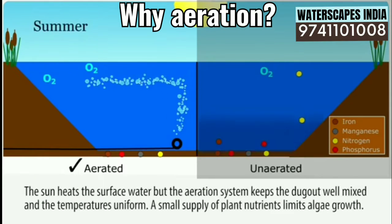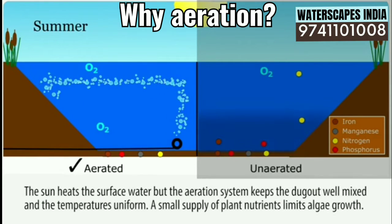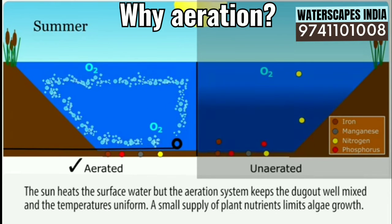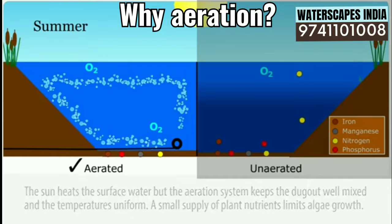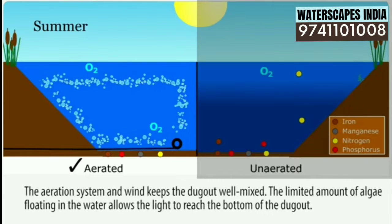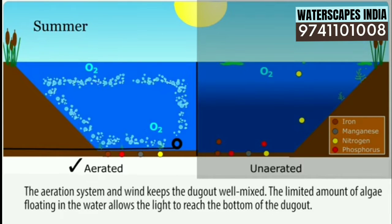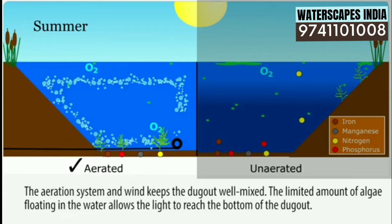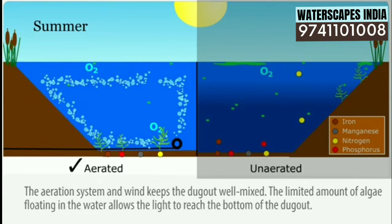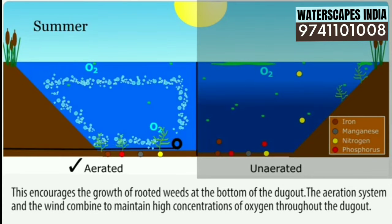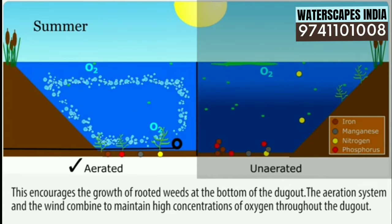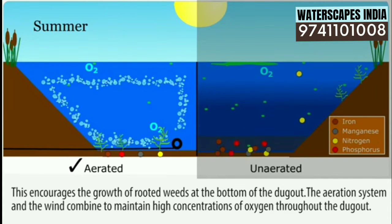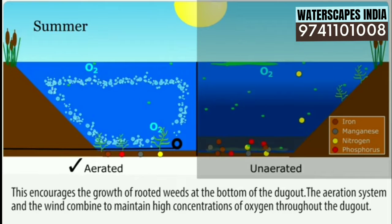The sun heats the surface water, but the aeration system keeps the dugout well mixed and temperatures uniform. A small supply of plant nutrients limits algae growth. The limited amount of algae floating in the water allows the light to reach the bottom of the dugout, encouraging the growth of rooted weeds. The aeration system and the wind combine to maintain high concentrations of oxygen throughout the dugout.